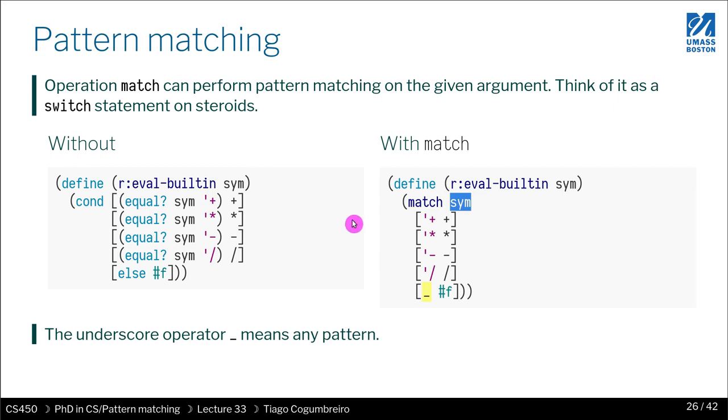The equivalent can be written using a match much more simply because match is doing implicitly an equals. So this would be exactly the same code, would mean exactly the same thing, they're equivalent. You would write match sym and then you write the symbols that you want to match against. So if the symbol equals to whatever symbol you wrote, then you return this on the right.